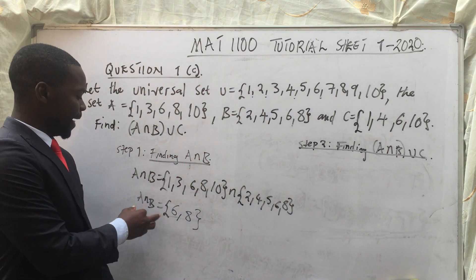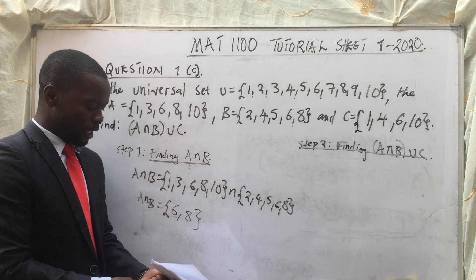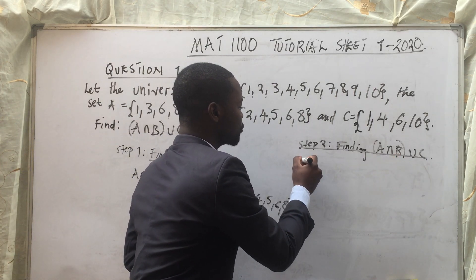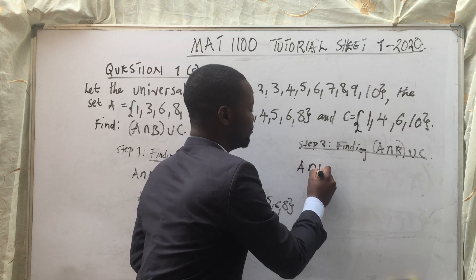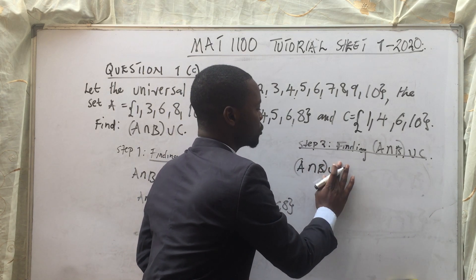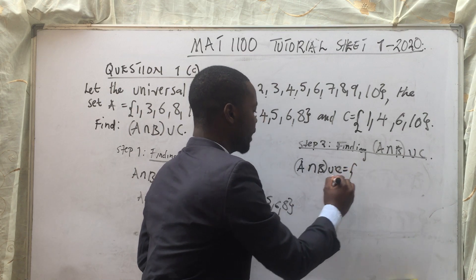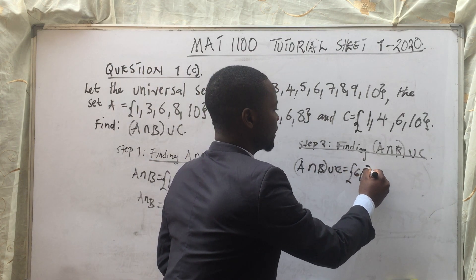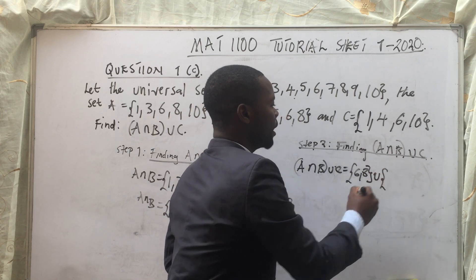So now, we already know what A intersection B is. So therefore, we are going to say, A intersection B union C is equal to A intersection B, we have got 6, 8, and then union, set C.